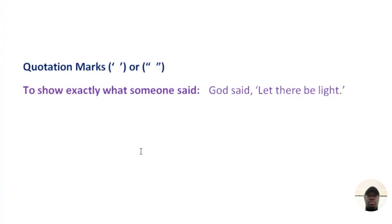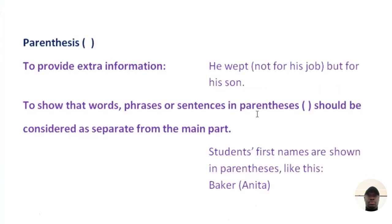Quotation marks show exactly what someone said. For example: 'God said, "Let there be light."' Parenthesis is used to provide extra information. For example: 'He wept (not for his job, but for his son).' The words in parenthesis give extra information about why he wept — not for his job, but for his son.